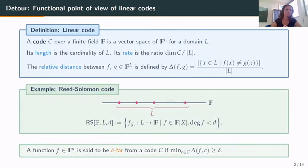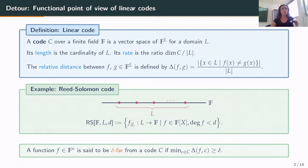One famous example of a linear code is the Reed-Solomon code. You take a domain L which is a subset of your finite field, and you consider functions from L to F which coincide with a univariate polynomial of degree less than d. This gives a code of dimension d. Finally, a function f is said to be delta-far from code C if it is at distance at least delta from any element of C.